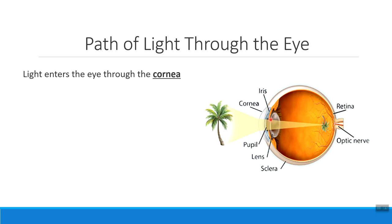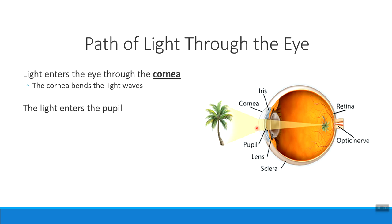Remember that the clear front part of your eyeball is called the cornea, and this is the first structure that light has to pass through in order to get into the eyeball. The cornea is really important for bending light waves. In particular, the cornea is bending those waves so that they'll pass through the pupil, which is just an opening or a hole in the colored part of your eyeball called the iris.